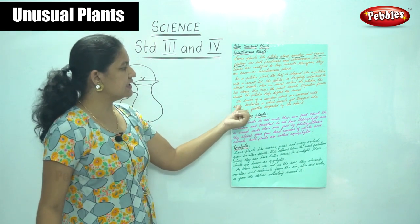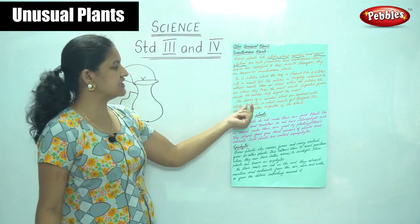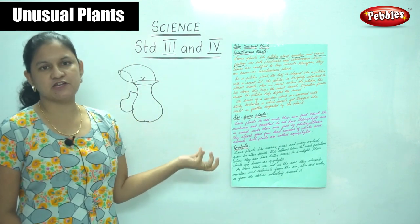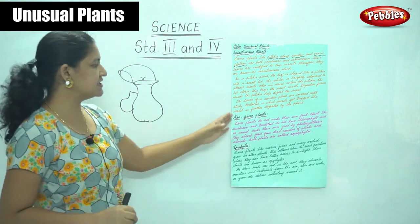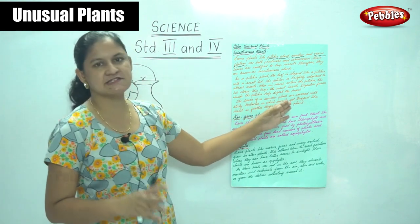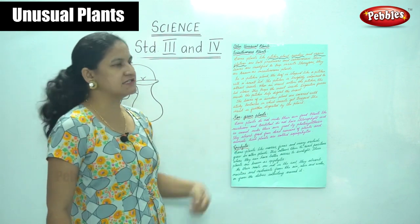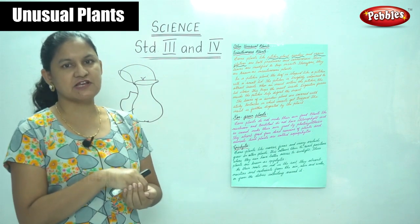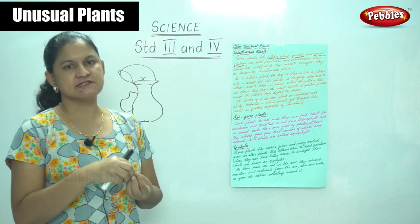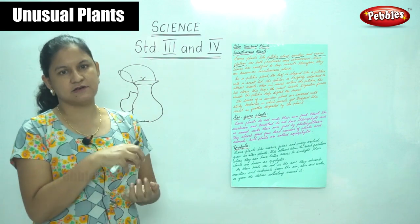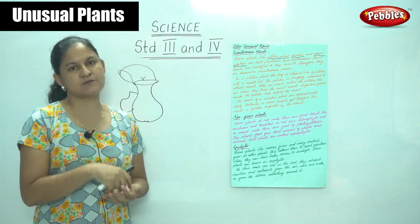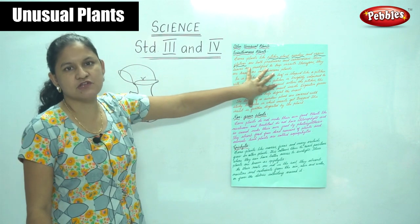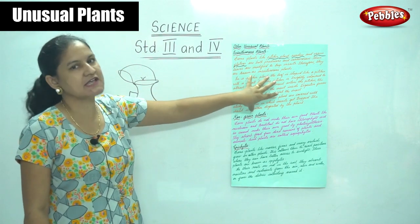The leaves of a sundew plant are covered with sticky tentacles in which insects get trapped. When an insect sits on the leaves of the sundew plant, it gets stuck because of the sticky tentacles and is digested by the plant. These are your insectivorous plants, which are also both producers and carnivores.